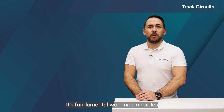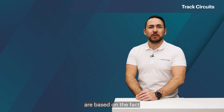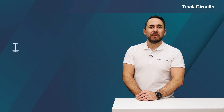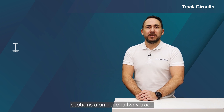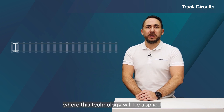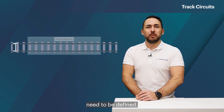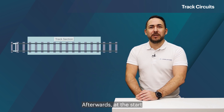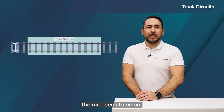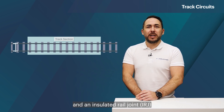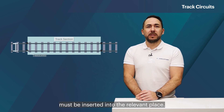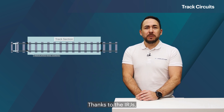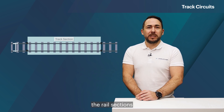The fundamental working principles of track circuits are based on the fact that train axles are conductive. Firstly, sections along the railway track where this technology will be applied need to be defined. Afterwards, at the start and end of a section, the rail needs to be cut and an insulated rail joint (IRJ) must be inserted into the relevant place. Thanks to the IRJs, the rail sections become electronically isolated from each other.